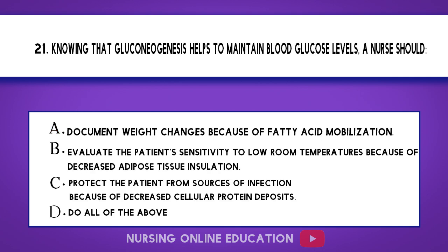Question 21. Knowing that gluconeogenesis helps to maintain blood glucose levels, a nurse should: A. Document weight changes because of fatty acid mobilization. B. Evaluate the patient's sensitivity to low room temperatures because of decreased adipose tissue insulation. C. Protect the patient from sources of infection because of decreased cellular protein deposits. D. Do all of the above.